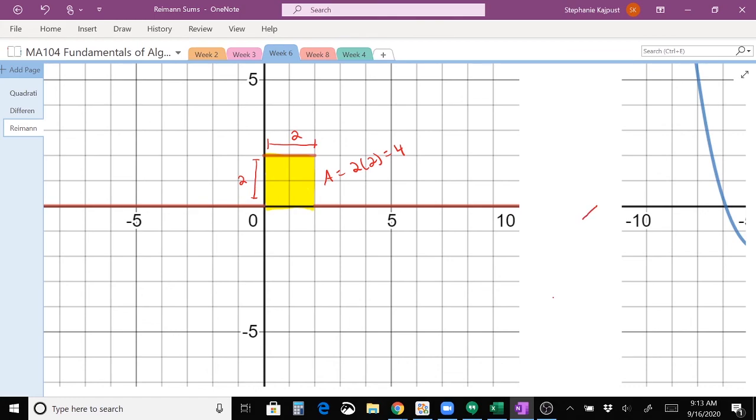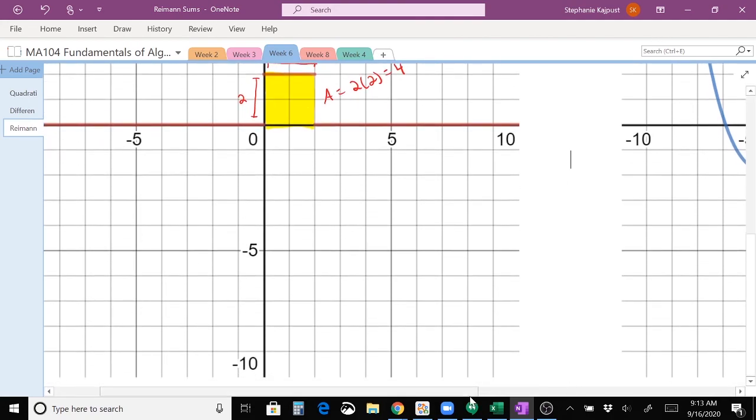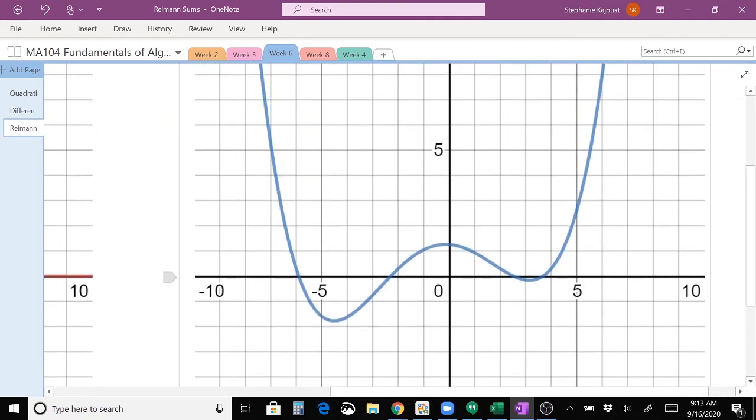Now this gets to be a little trickier when you have something more complicated like this one on the right, because it's not clear how you find the area of curves. And that's basically partly what half of calculus is all about, is how to find the area of a curve. And so Riemann came up with something called a Riemann sum.